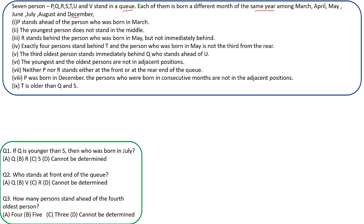The first three clues are: P stands ahead of the person born in March. The youngest person does not stand in the middle. R stands behind the person born in May, but not immediately behind. After reading these three statements, it's clear we have to arrange persons in a queue and assign each a birth month.